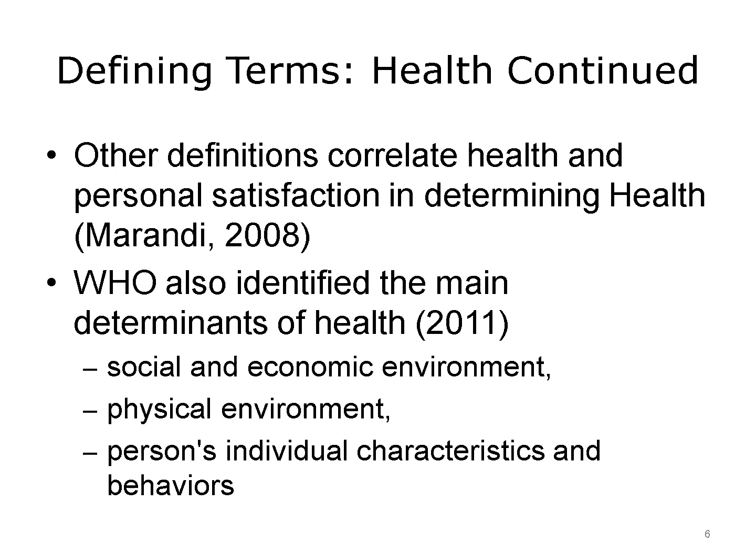Additional definitions of health may include other factors, such as health status and personal satisfaction. According to the WHO, the main determinants of health include the social and economic environment, the physical environment, and the person's individual characteristics and behaviors.